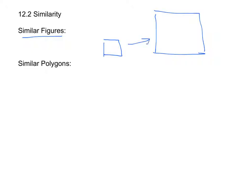And then similar polygons are, if the corresponding angles are congruent and the corresponding sides are proportional, then you have a similar polygon.